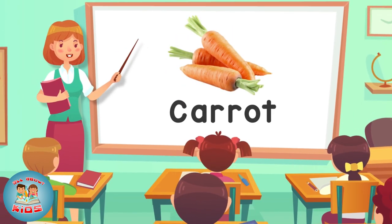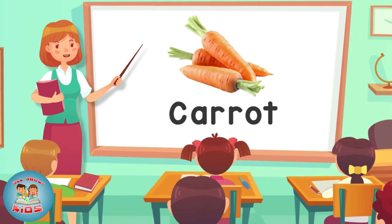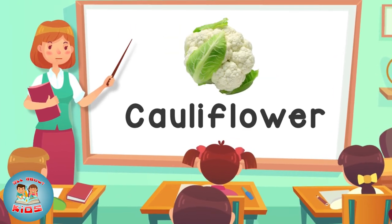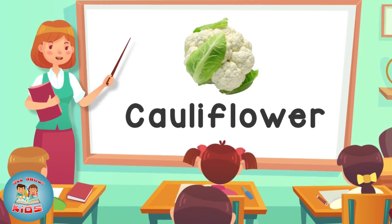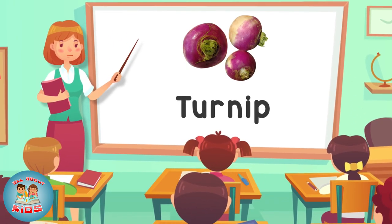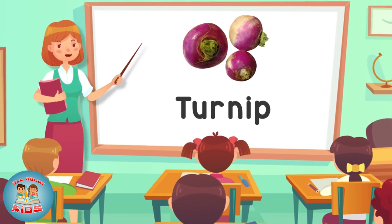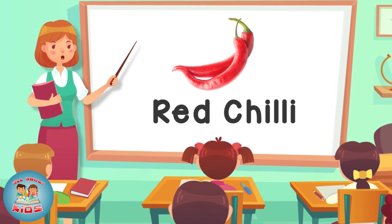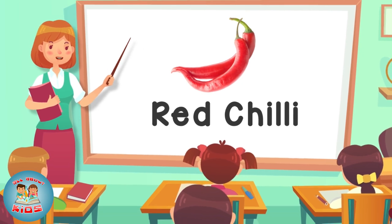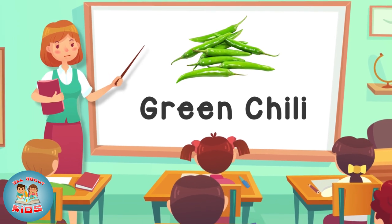Carrot — this is a carrot. Cauliflower — this is a cauliflower. This is a Kalizar. Turnip — this is a turnip. Red Chili — this is a red chili. Green Chili — this is a green chili.